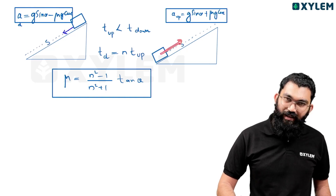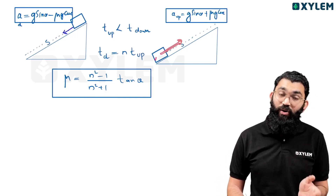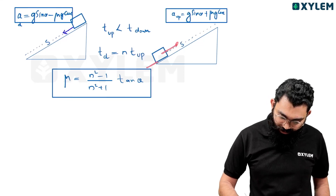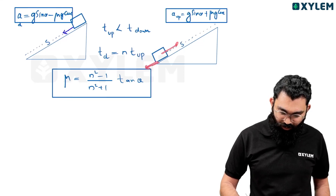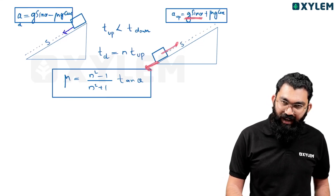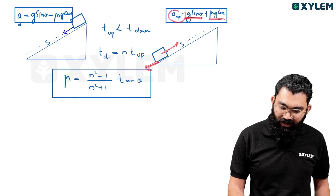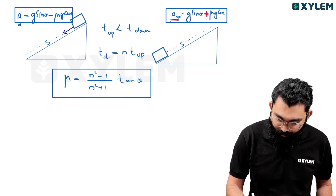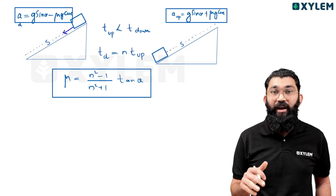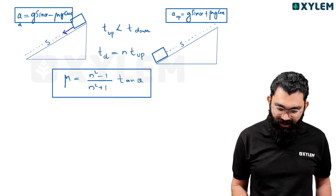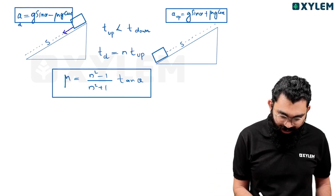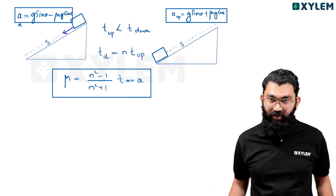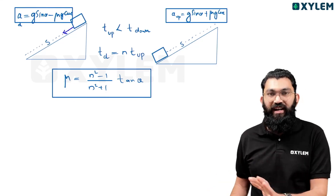On the way down, mg sin θ acts downward but friction μmg cos θ opposes motion and acts upward. So the net acceleration during descent is g sin θ minus μg cos θ. The acceleration during ascent is greater in magnitude than during descent. Since the distance S is the same, the time of descent is longer than the time of ascent.